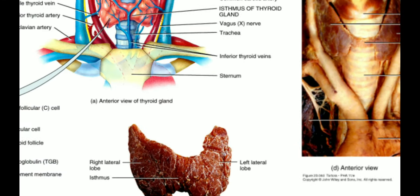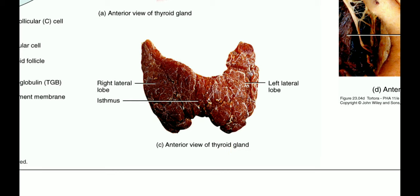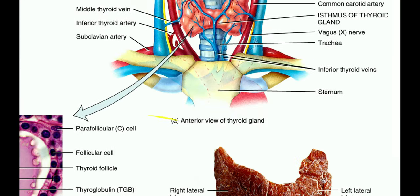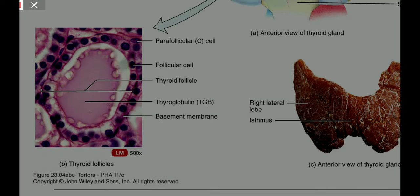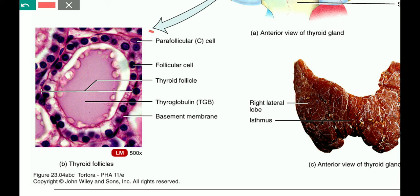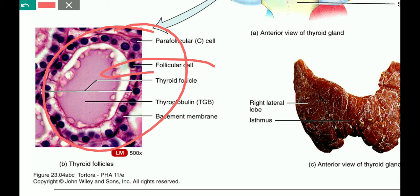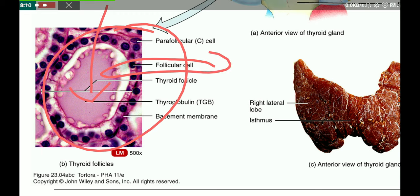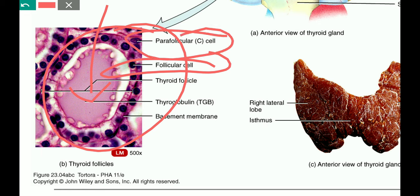Here we can see the anatomical structure of the thyroid gland. There is a connecting structure between the two lobes called the isthmus. Inside the thyroid gland, follicular cells secrete their contents into the lumen. Between the follicles there are separate cells called parafollicular cells, from which calcitonin is produced.